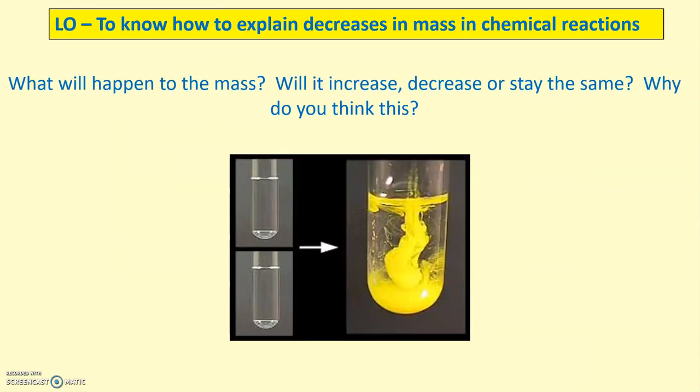On the screen, we have a mixture diagram here of two liquids being reacted together to form a solid precipitate. The question above asks, what will happen to the mass? Will it increase, decrease or stay the same? Why do you think this?